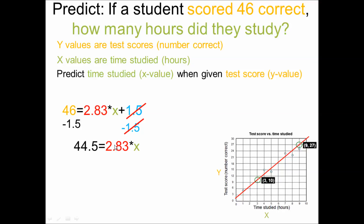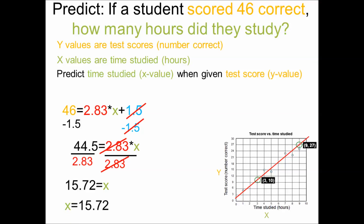Now, what's the opposite of multiplying by 2.83? Dividing by 2.83. Whatever you do to one side you have to do to the other, so we divide both sides by 2.83. On the right side 2.83 over 2.83 cancels, leaving just x. Then we take 44.5 divided by 2.83 and get 15.72, so x equals 15.72 hours studied. Does that answer make sense? Well, from the graph a student who studies about 9 hours scores about 27, so if they study 15.72 hours, yeah, that would seem about right.